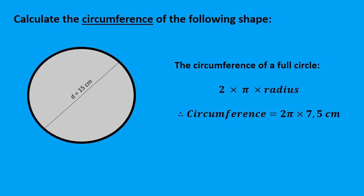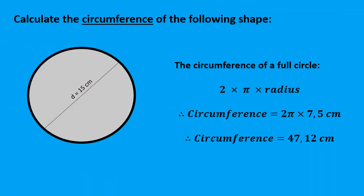Pop that into your calculator. So 2 times π times 7.5. Please remember to find where π sits on your calculator — you have to press Shift to get to π. And you get the answer: 2 times π times 7.5 is 47.12 centimeters. Please note that this is the circumference — we do not write centimeters squared or centimeters cubed. It's a distance around that circle, and the answer is 47.12 centimeters.